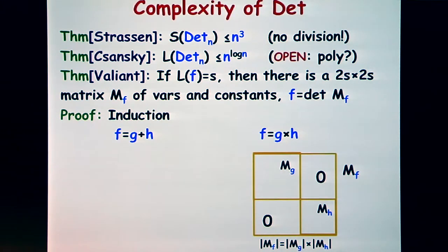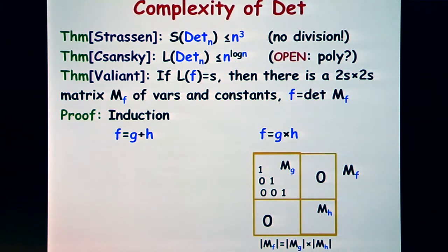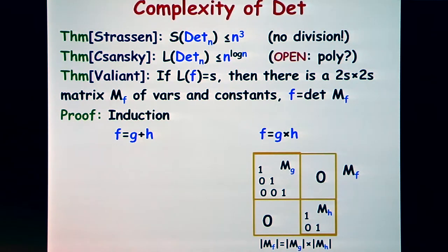The addition case is harder. You need an idea: impose more structure in the induction and demand that the matrices be almost triangular — upper triangular except that one diagonal below the main diagonal will have all ones. So you ensure this structure for both g and h. When you look at the product matrix for f, something is missing there — a 1 — so you put it in. It doesn't change the determinant, but this structure will help a lot when we do addition.